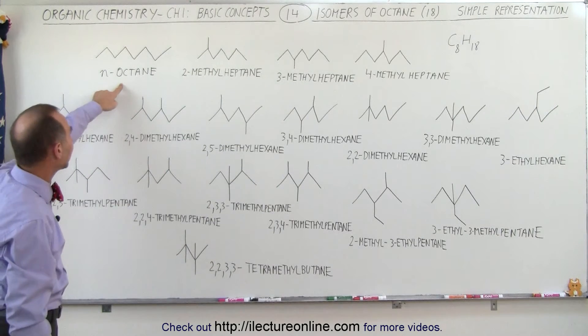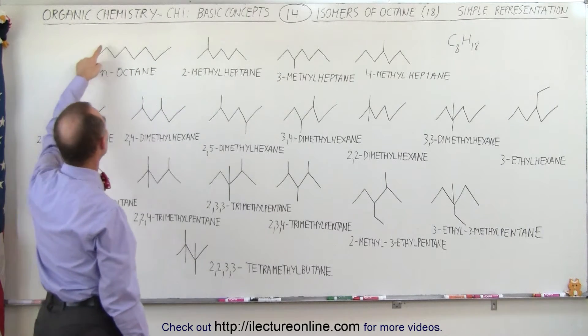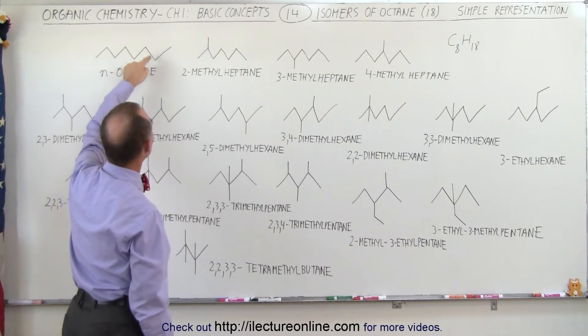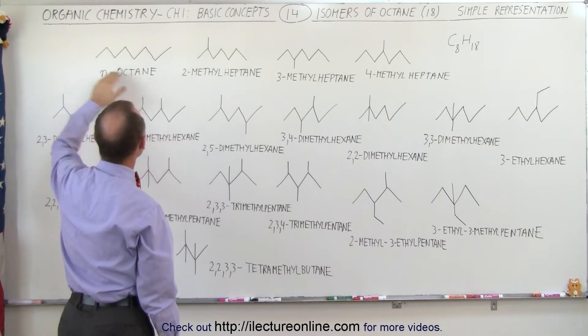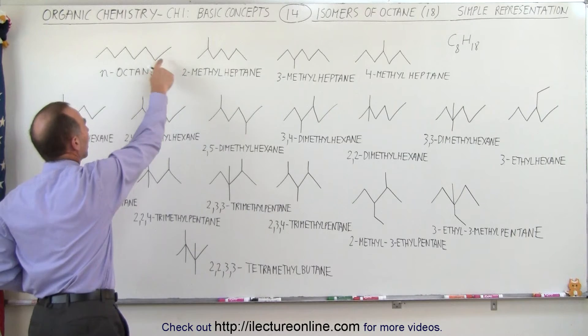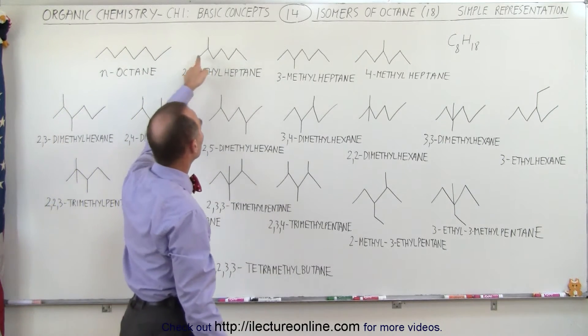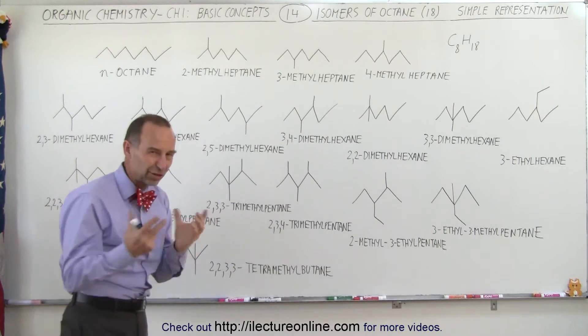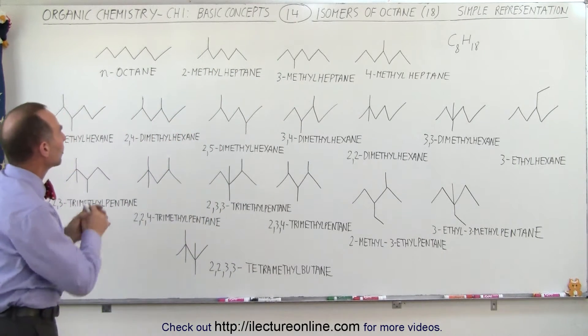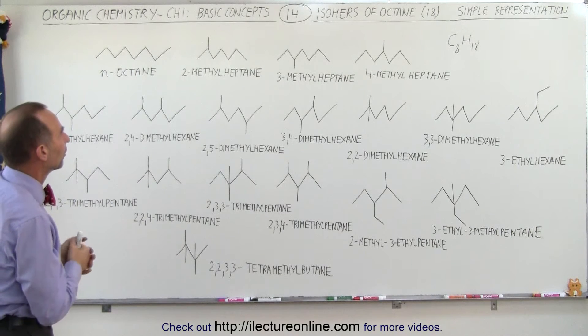Starting with n-octane, that's simply the linear chain of octane with eight carbons: one, two, three, four, five, six, seven, eight. When there's an even number of carbons, the chain does not have a complete set of triangular shapes—one will be incomplete. For heptane with seven carbons, notice there's a complete set of triangular shapes. That's how you can tell the difference between chains with even or odd numbers of carbons.